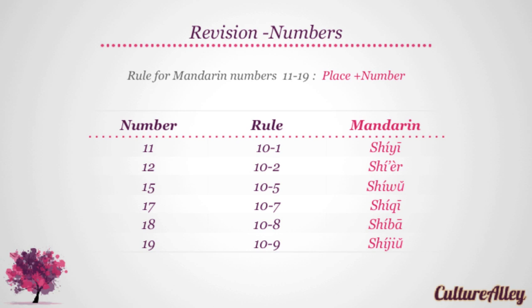12, that is ten and two, becomes shi er. 15, or ten and five, becomes shi wu. 17, which is ten and seven, translates as shi qi.